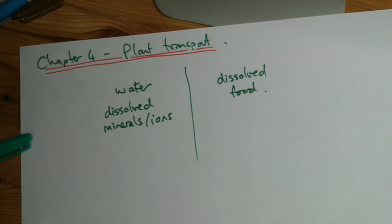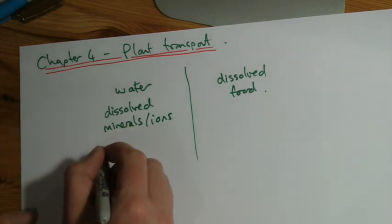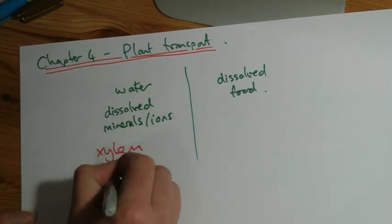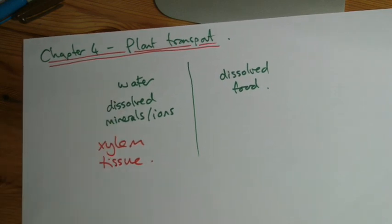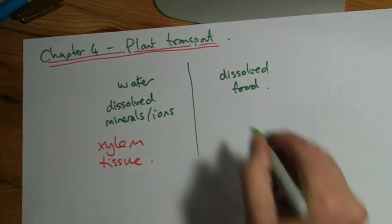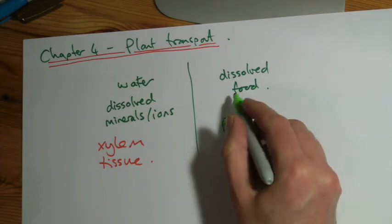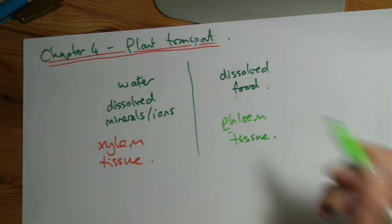There are two types of tissues, or tubes really, that transport things around the plant. Xylem tissue, long tubes which transport the water and dissolved minerals, and phloem tissue. It's easy to remember because phloem begins with the same sound, the F sound, phloem food.